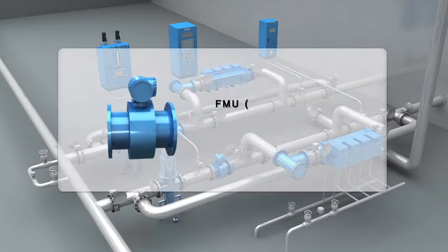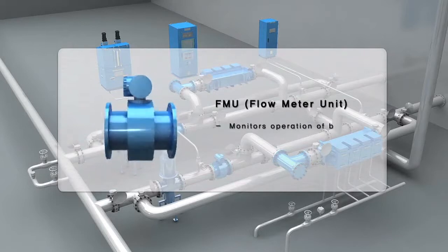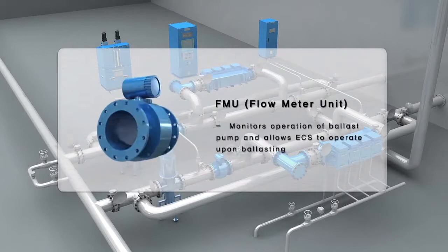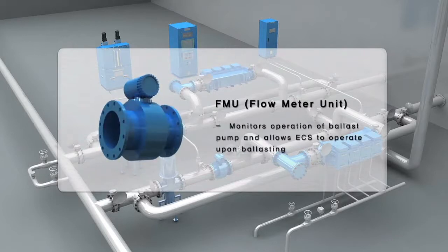FMU is installed between the ballast pump and the inlet of ECU. It monitors operation of the ballast pumps and assists in the proper functioning of ECS during ballasting.